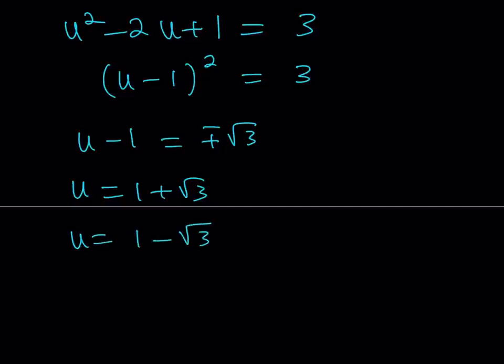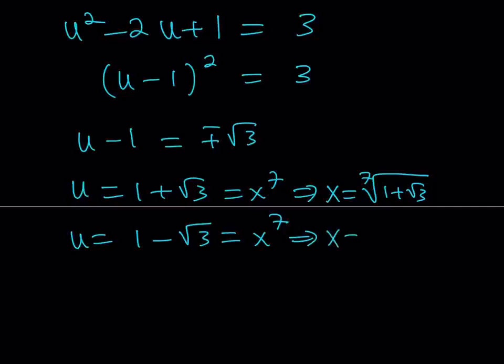Remember, u is equal to x to the 7th power. So let's set them equal to x to the 7th. From here you can take the 7th root of 1 plus root 3 — that's going to be a real number: x equals the 7th root of 1 plus root 3. And of course you can do the same for the second one: the 7th root of 1 minus root 3. Is that second one a real number? Because 1 minus root 3 is negative, but you're taking the 7th root, therefore the answer is going to be negative and real. So we get two real solutions from here. And for the complex solutions, the 7th roots of 1 plus root 3 and 1 minus root 3 will also yield some complex solutions.